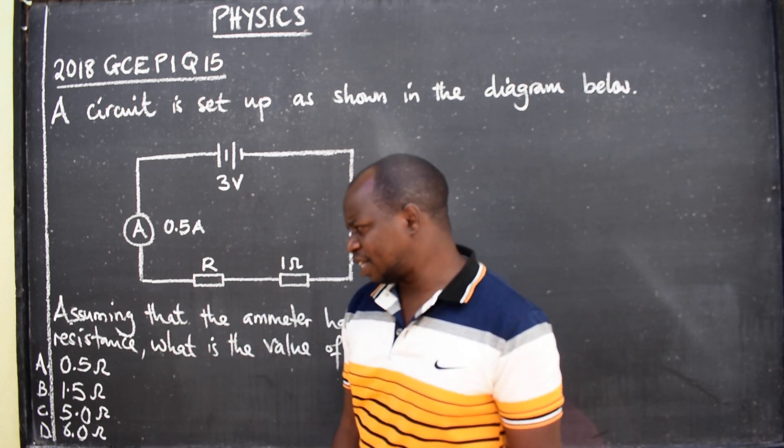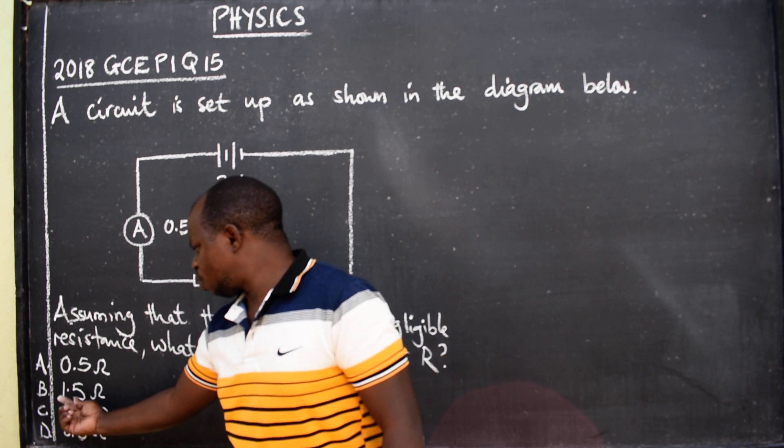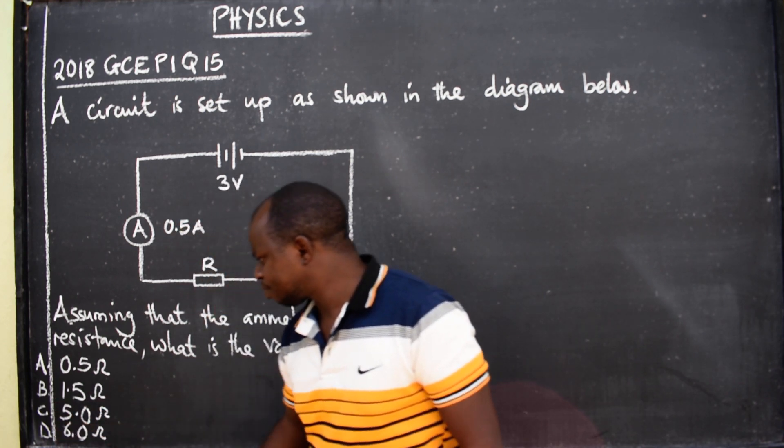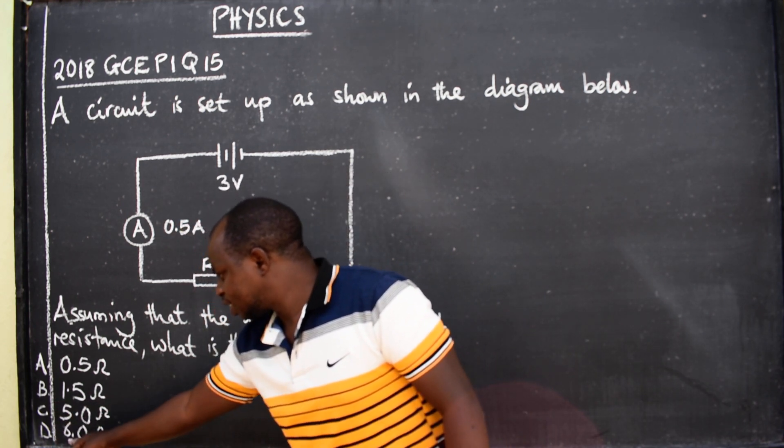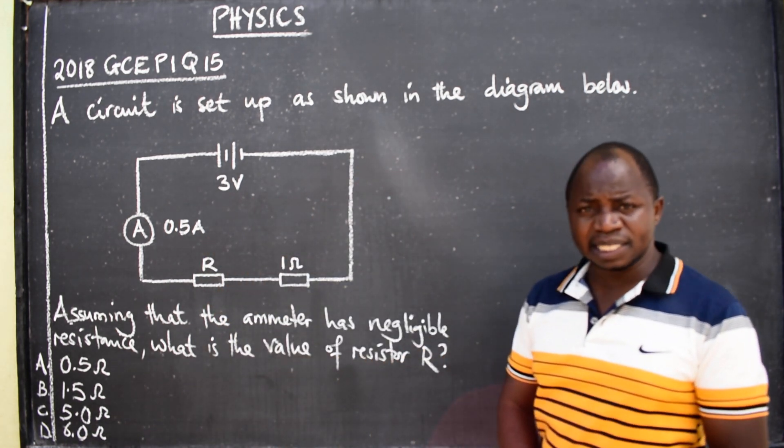Options were provided: A) 0.5 ohms, B) 1.5 ohms, C) 5.0 ohms, D) 6.0 ohms. Which one do you think is the correct answer?